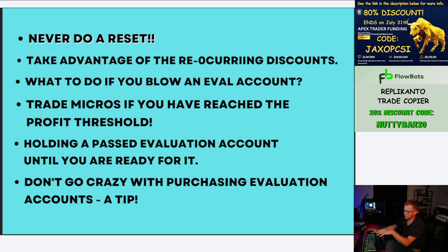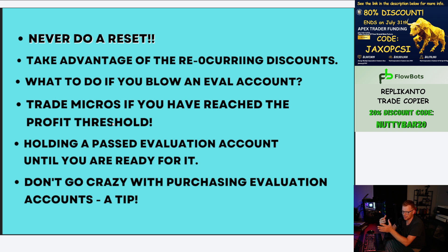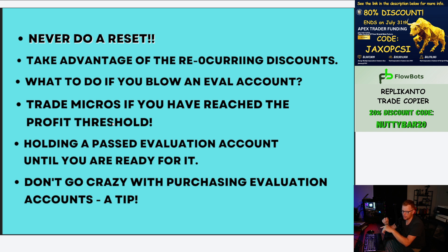Another tip: trade micros if you've already reached the profit threshold. For an Apex evaluation account you need to trade for seven days, so if you've hit your profit threshold by day three, then on days four through seven you can just flip micro contracts — go in and get out right away. That counts as a trading day and it protects your balance instead of risking a full mini contract and potentially dropping below the threshold. Note that this is allowed on an evaluation account but not on a funded account, where different rules apply.